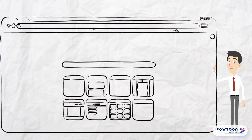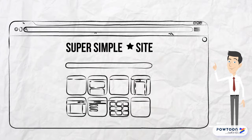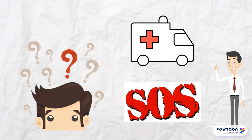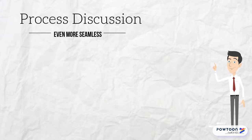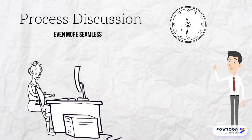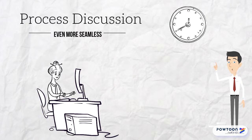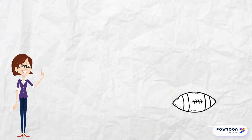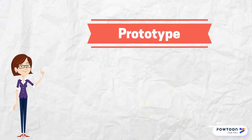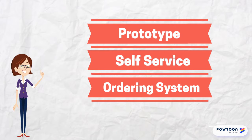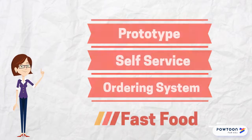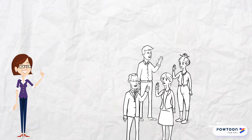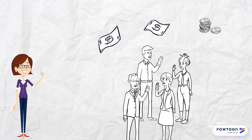We kept the overall design as simple as possible to avoid confusion and reduce the need for help. The process was kept seamless from the time the customer touches the screen until the time they finalize their order. Our team decided to tackle a prototype self-service ordering system for fast food restaurants in order to compete with the changing needs of today's customer and the demands of higher wages for employees.